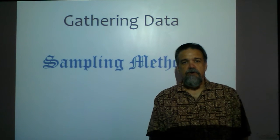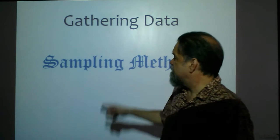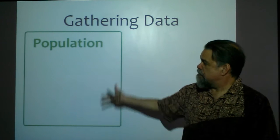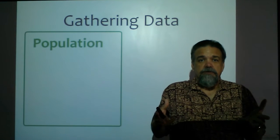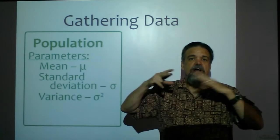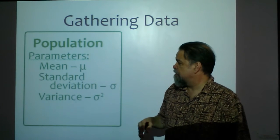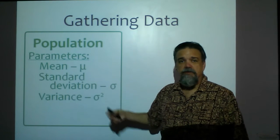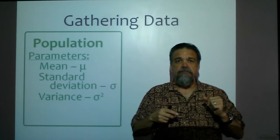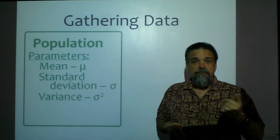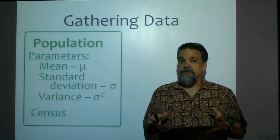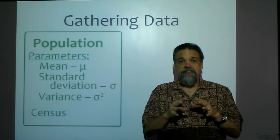Hey stat students, let's talk about sampling methods. We have a population and we want to measure something in it — maybe the mean height, IQ, or weight. We might also want to know the standard deviation or variance, which tell us how spread out the measurements are. To get those exactly, we would have to take a census and measure the entire population, but usually that's just not feasibly possible.